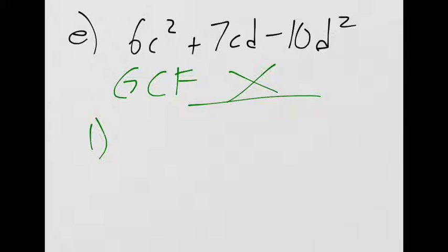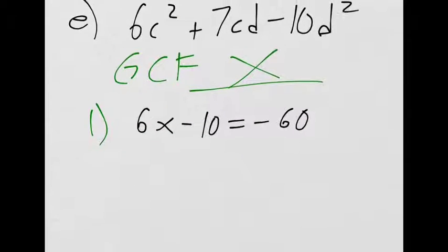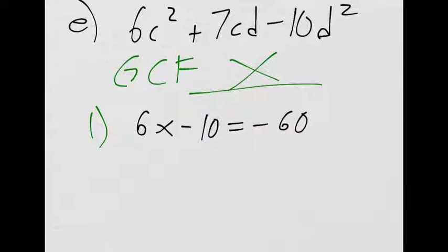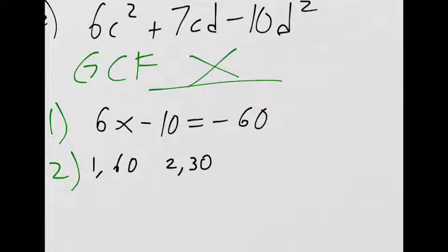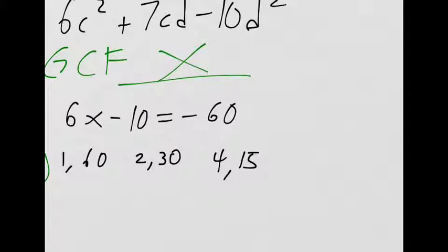What's my magic number? Negative 60. 6 times negative 10 is negative 60. 60 has a lot of factors. So we want two factors that multiply to give us negative 60, add to give us positive 7. So let's look at our options. I've got 1 and 60. What else do I have? 2 and 30. 15 and 4. Is it divided by 3? We skipped that one. Yes. Yep. 3 and 20.